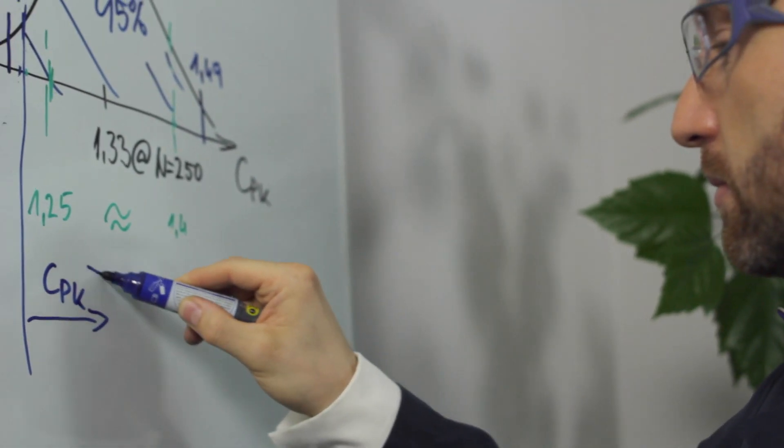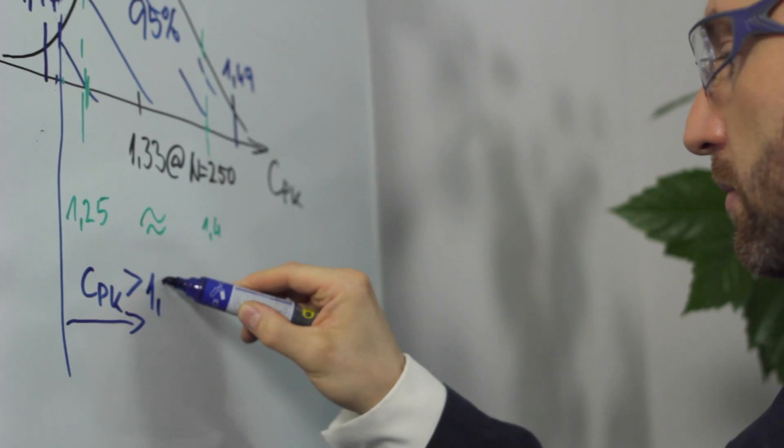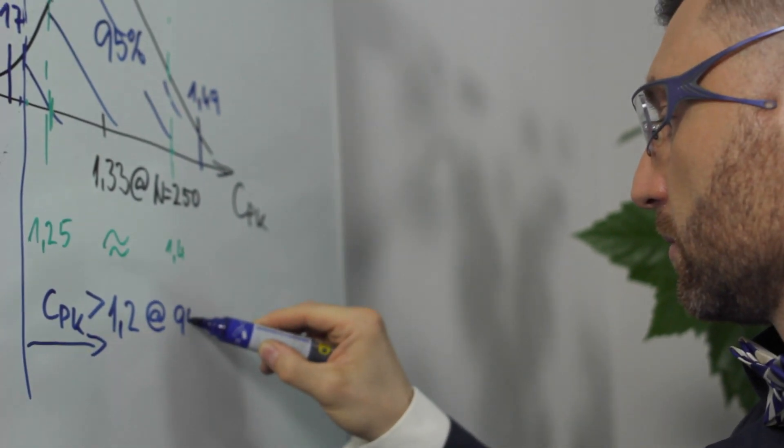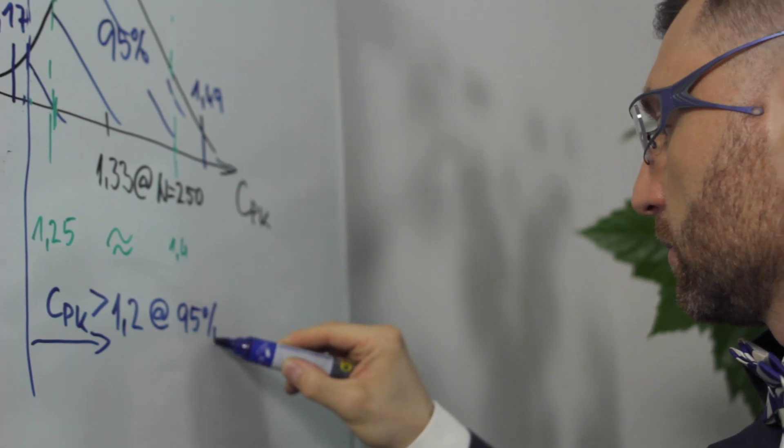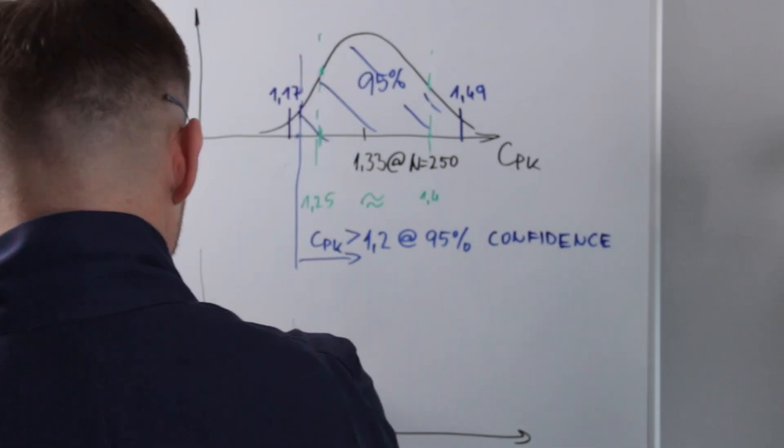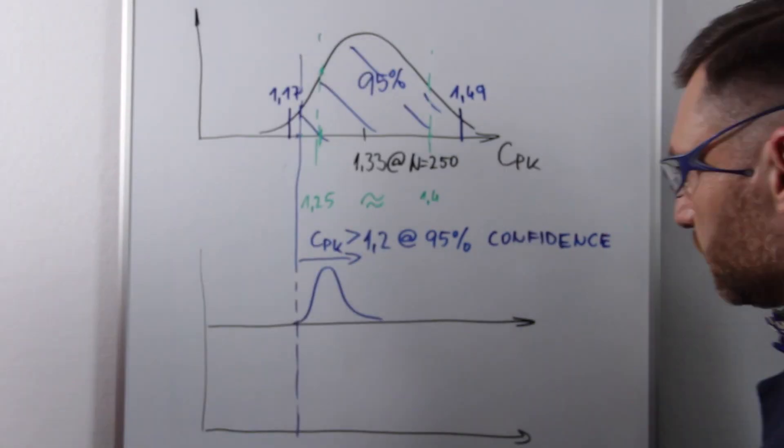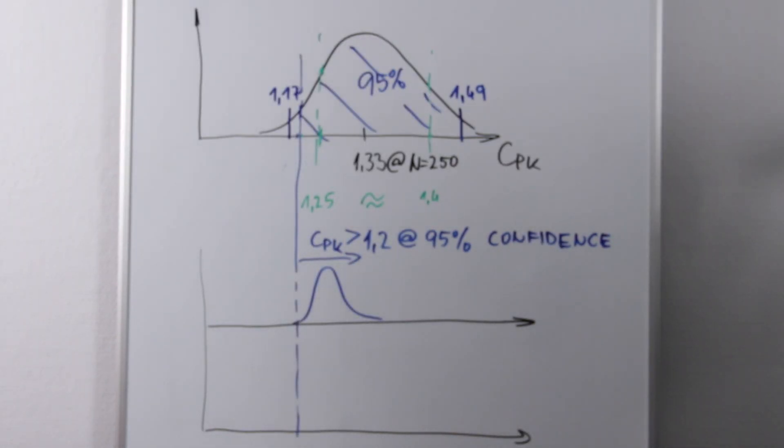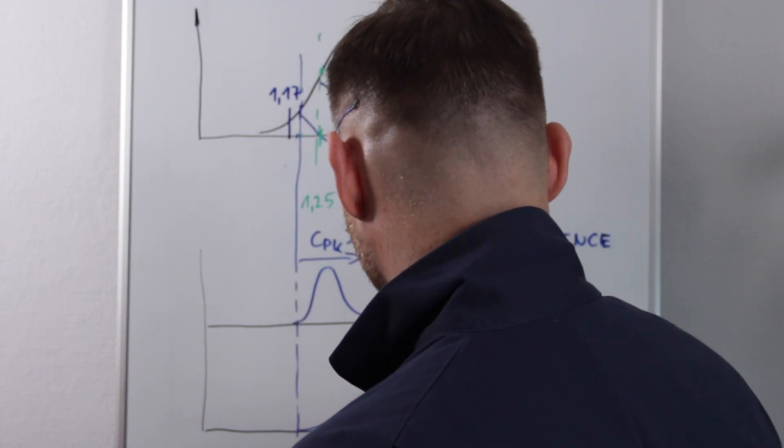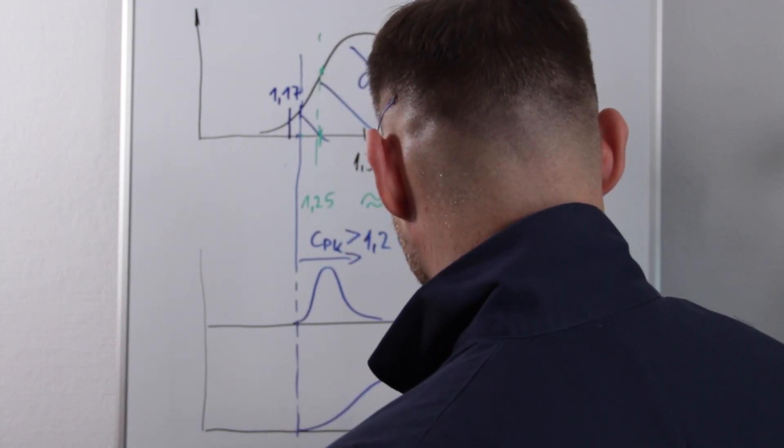You can define your requirement by setting, for example, the lower bound of the 95% confidence to be at least 1.2. When defined in such a way, you can increase the precision by acquiring more observations for processes that are just slightly above the limit, and you can save quite some time for processes that notably exceed the criteria.